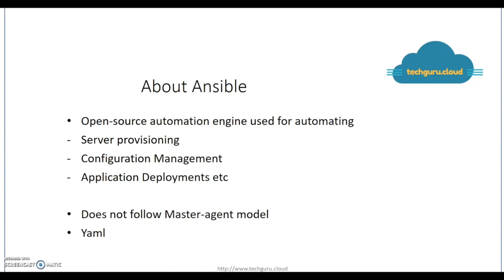Ansible is an open source automation engine which can be used for automating server provisioning, configuration management, and application deployments. It does not follow the master and agent model, so you don't have to install separate agents on all your servers for Ansible to work. It's very easy to deploy and most importantly it uses a very simple language, YAML, for Ansible playbooks, which allows you to describe your automation jobs in a simple, plain English way.